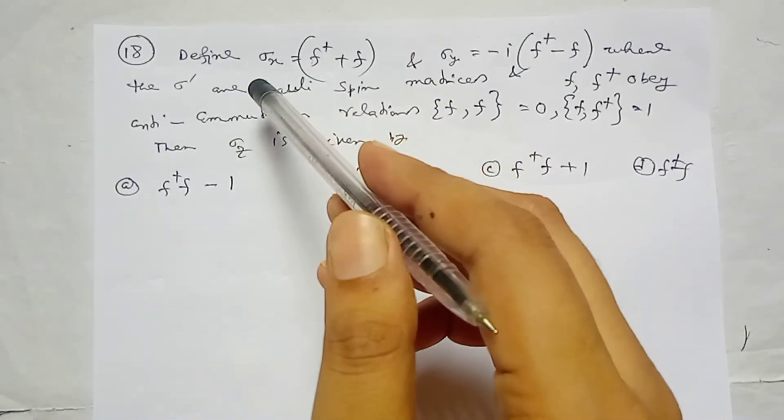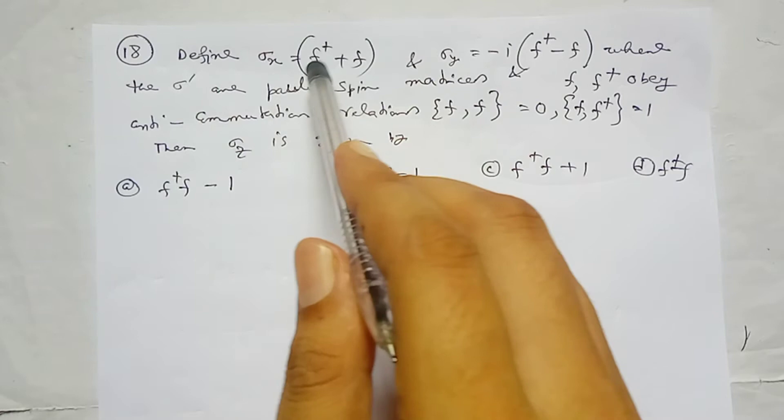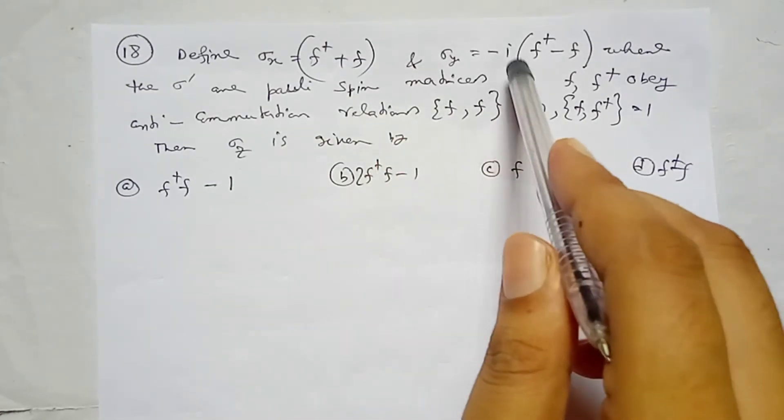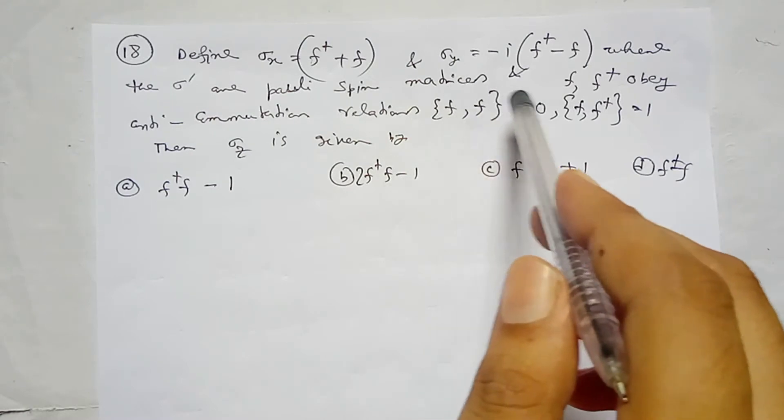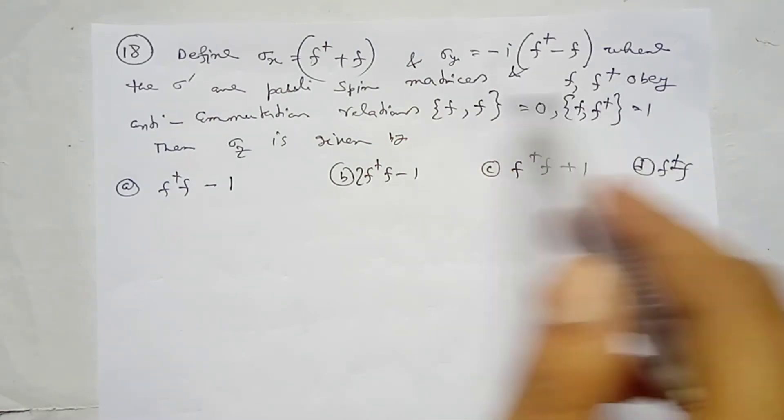Define sigma x as f dagger plus f, and sigma y as minus i times f dagger minus f, where sigma are the Pauli spin matrices.